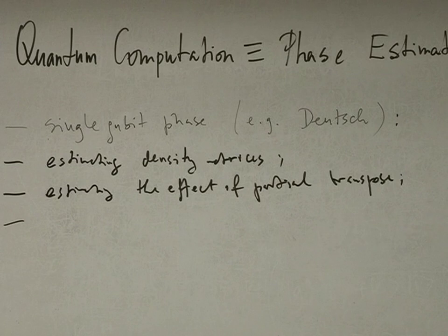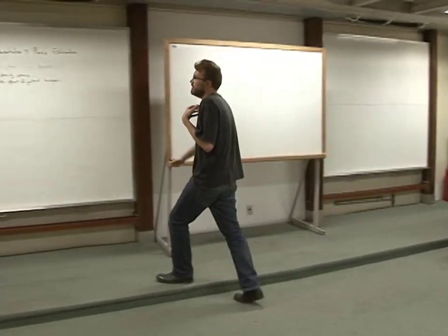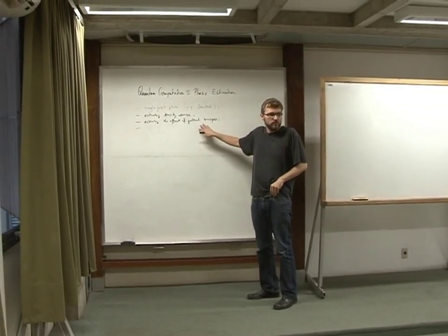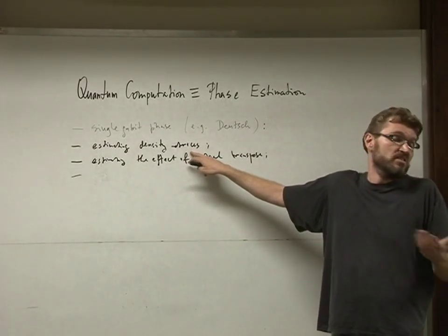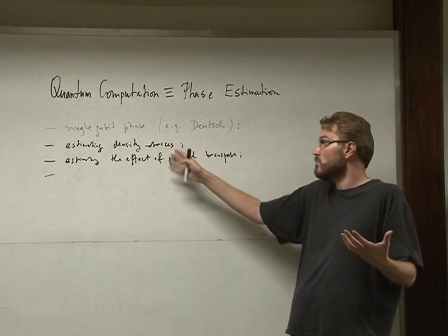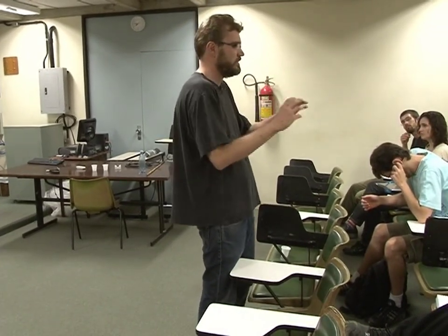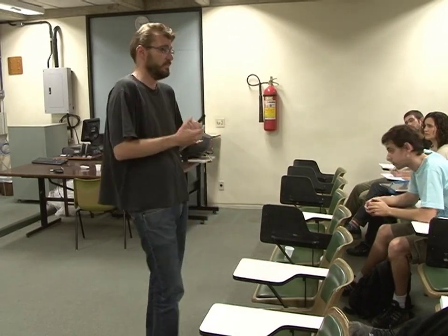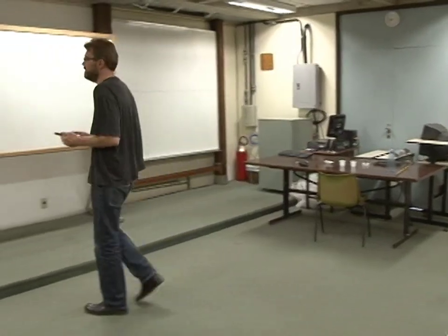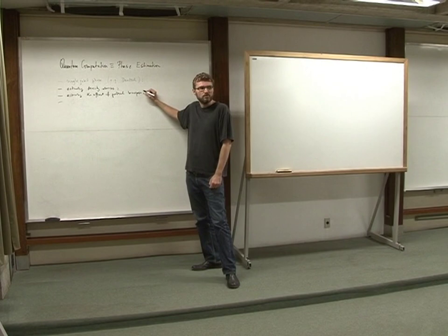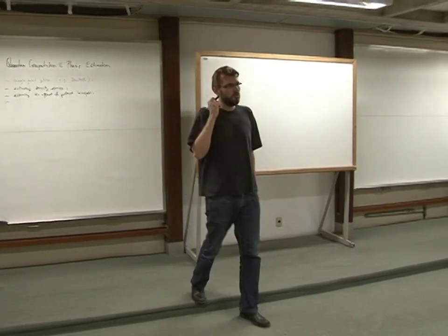Partial transposition is a positive map but not completely positive — it leads to a negative probability distribution. So you can't implement it directly on a density matrix and then estimate the density matrix. You can't do that because it's not a physical operation. However, partial transposition can actually be implemented — not as a naked partial transposition on the state itself, but within a trace. Then it becomes the same as a witness of entanglement, and there's just a Hermitian operator — negative numbers are okay with Hermitian operators.